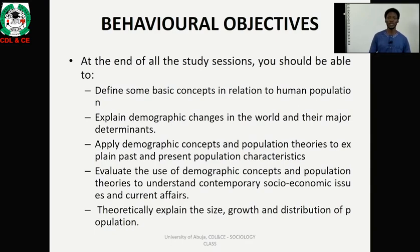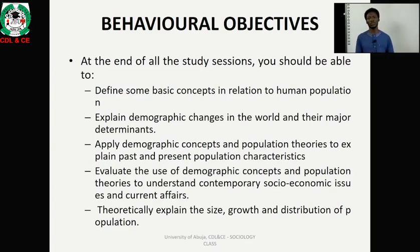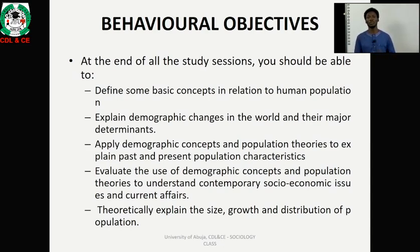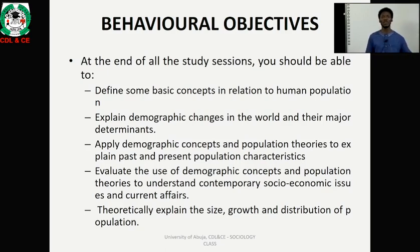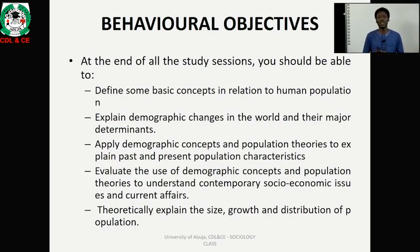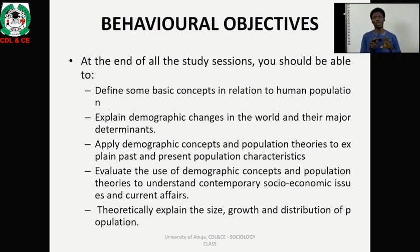We have the behavioral objectives of the course. Behavioral objectives are talking about those learning outcomes that are expected of you having undertaken this course. You are expected to be able to define some basic concepts relating to human population, to know the demographic variables that affect human population, and to be able to scientifically study and explain human population size and growth.